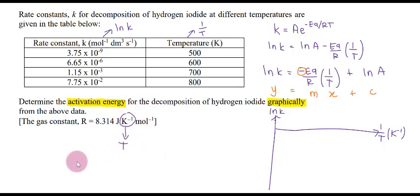And then since the gradient equals negative Ea over R, so Ea, activation energy, equals negative gradient times with R. So the units for Ea that you should obtain from this graph is Joule per mole. If you want to convert it into Kilo Joule per mole, just divide it by 1,000.